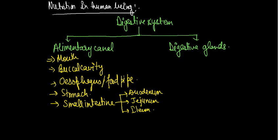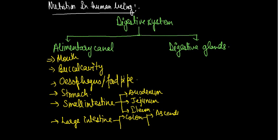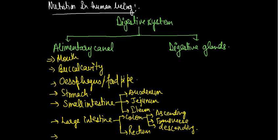The last part of the alimentary canal is the large intestine. The large intestine is also divided into different parts. The first is the colon, which is divided into three parts: ascending colon, transverse colon, and descending colon. Then comes the rectum, and the last one is the anus. So the alimentary canal starts from the mouth and ends at the anus.